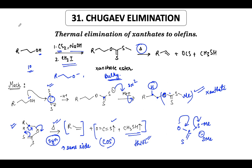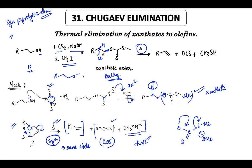One very important point about syn pyrolytic eliminations is that the stereochemistry is syn. This means if the xanthate is above the plane, it will look for a hydrogen that is also above the plane. If we have a chiral center, it does not do elimination on a hydrogen that is below the plane. We have to keep that in mind.